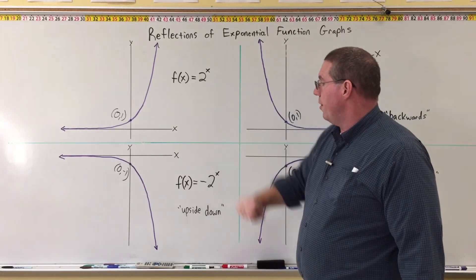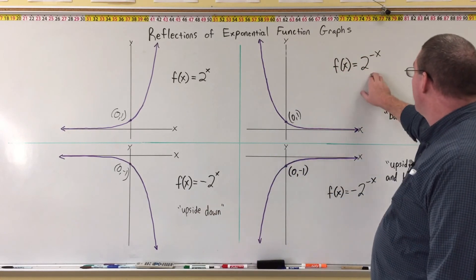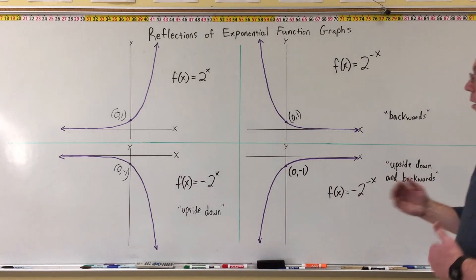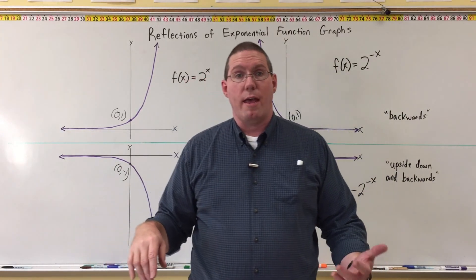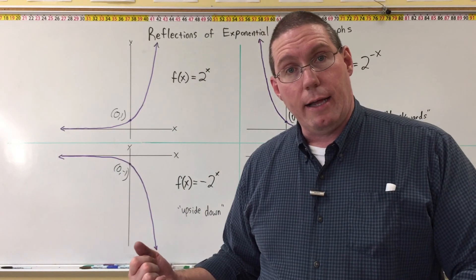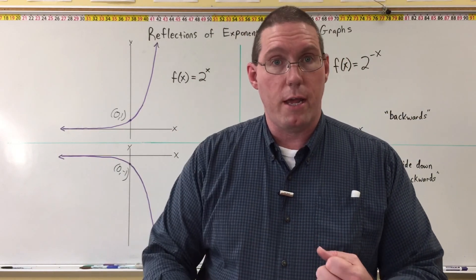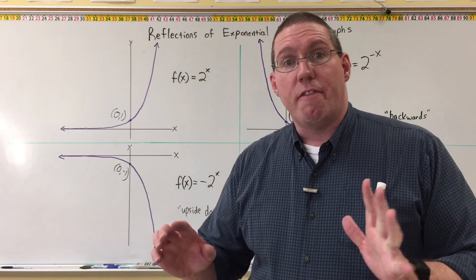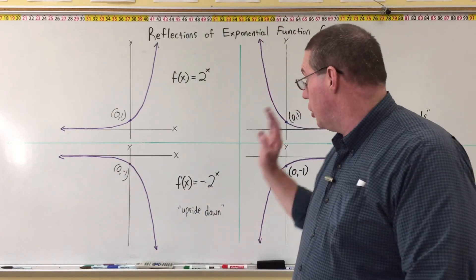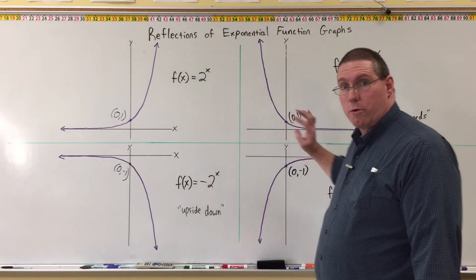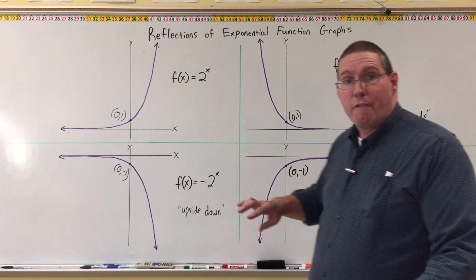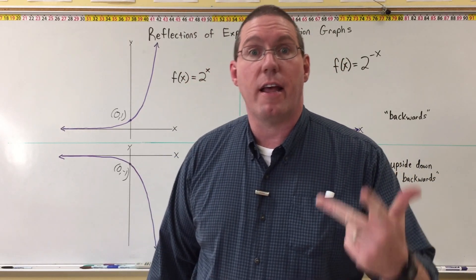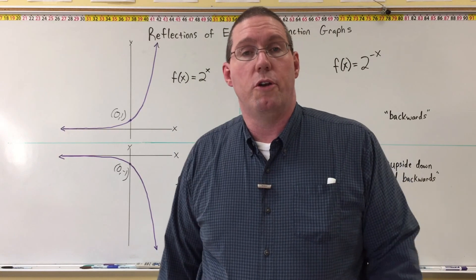So: the regular function is 2^x; negative 2^x is upside down; 2^(-x) is backwards; and -2^(-x) is upside down and backwards. Now there's one more thing that will change. In the last video I showed how to identify the base of an exponential function. If we combine that with what we just learned about negatives — upside down, backwards, and upside down and backwards — we can look at almost any exponential function graph and identify its base, whether it has a negative on the front, and whether it has a negative on the x. That's what we'll do in the next segment.